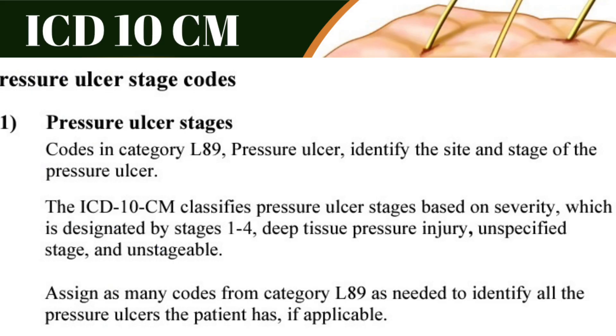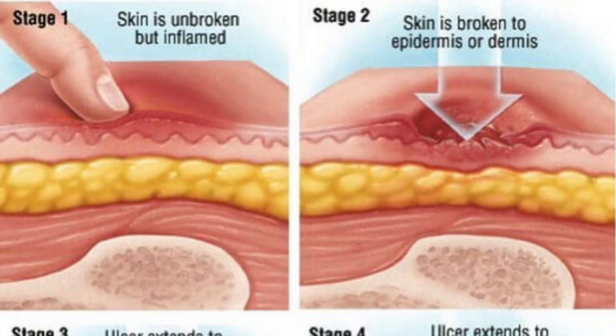Doctors may not document pressure ulcer stages as 'Stage 1' or 'Stage 2' — they use medical terms instead. When you see those medical terms, you must understand what stage the patient's pressure ulcer is at and code the correct diagnosis. Stage 1 means a red, blue, or purplish area first appears — it looks like a bruise on the skin with no open sores, just discoloration. It may be warm to the touch, itchy, or have a burning sensation.